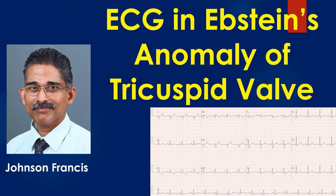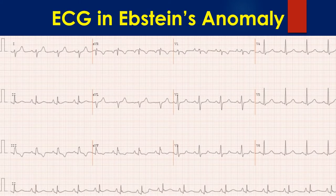ECG in Ebstein's anomaly of tricuspid valve showing right axis deviation of QRS. Notched R waves in leads 2, 3, AVF, and V1 suggest fragmented QRS. Peaked P waves indicate a right atrial abnormality, though the typical voltage criteria for right atrial enlargement of more than 0.25 mV is not satisfied.